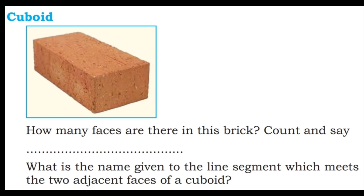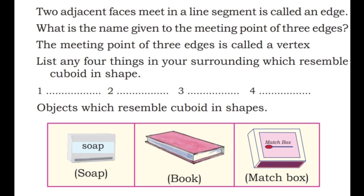What is the name given to the line segment which meets the two adjacent faces of a cuboid? Two adjacent faces meet in a line segment — this is called an edge. What is the name given to the meeting point of three edges? The meeting point of three edges is called a vertex.